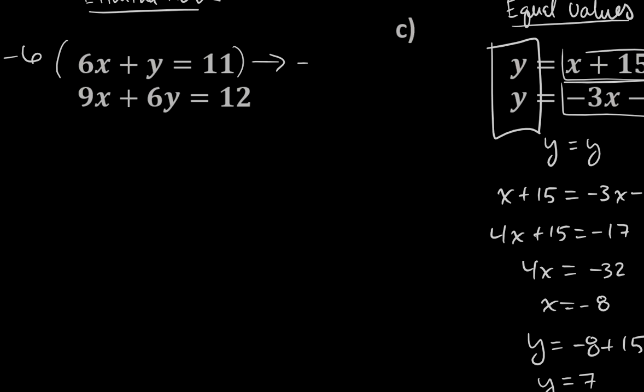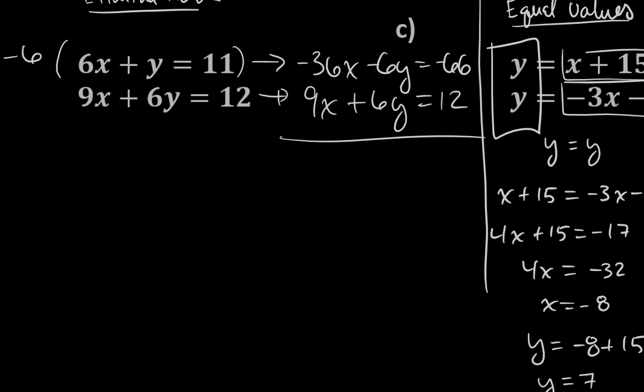So this is going to become negative 36x and then minus 6y, and that's equal to negative 66. Ran out of room here. So let's rewrite this other equation again. This is going to be 9x plus 6y equals 12. And when I combine these equations, negative 36x plus 9x ends up being negative 27x.